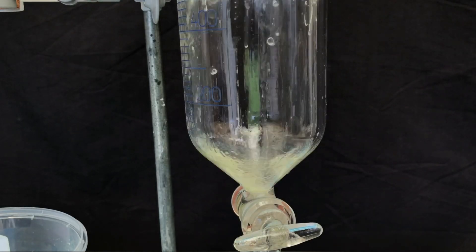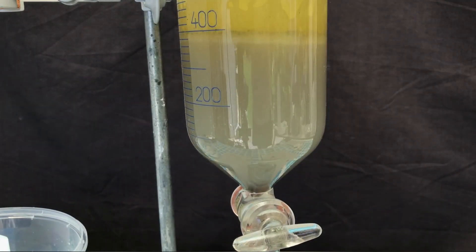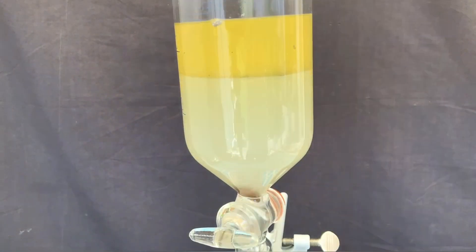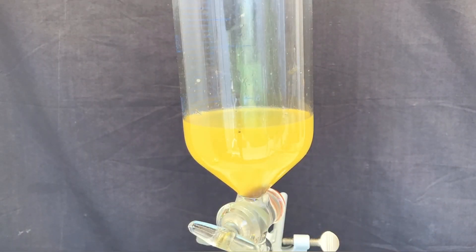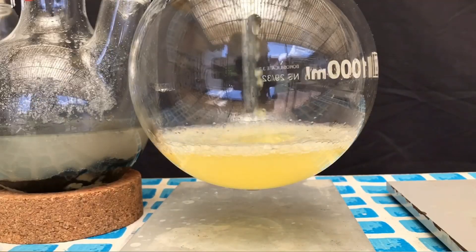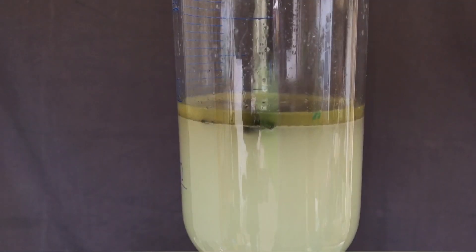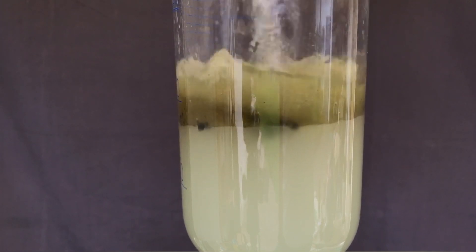All of the contents were then transferred to a separatory funnel. The bottom aqueous layer was drained off, but we didn't discard it yet. As you can see, the top ether layer has a beautiful yellow color. But this is actually not good, because these are just impurities and the product shouldn't be yellow.